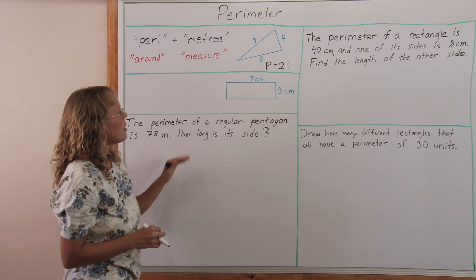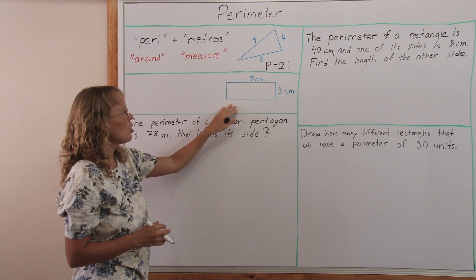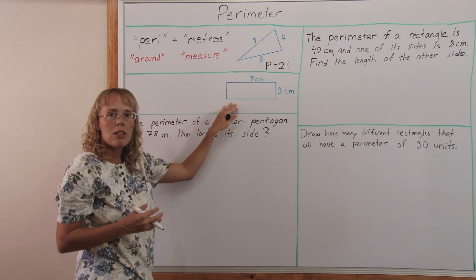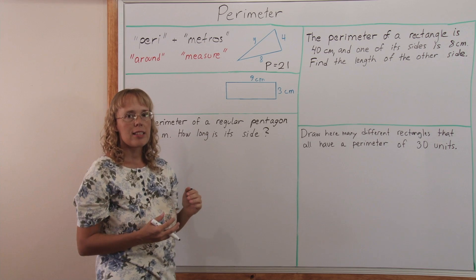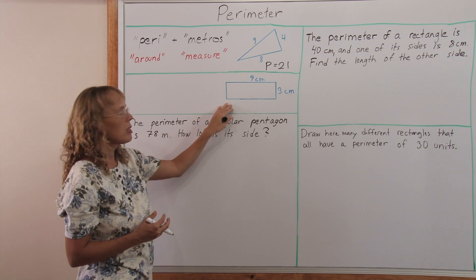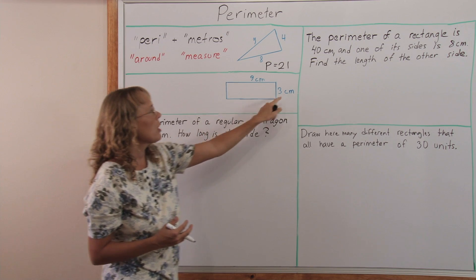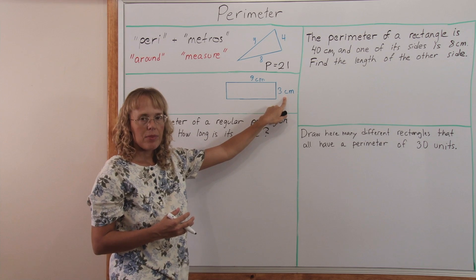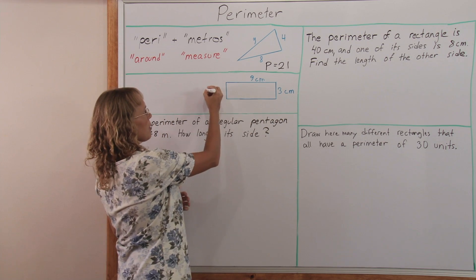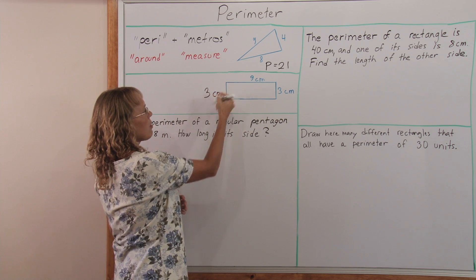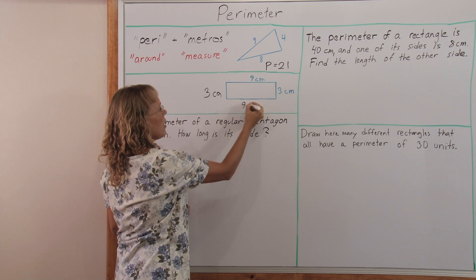Then here's another type of problem where the student needs to recognize that not all side lengths are given. Find the perimeter of this rectangle. But you're only given these two side lengths.